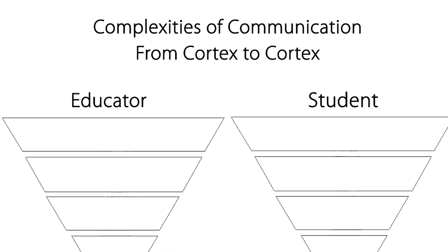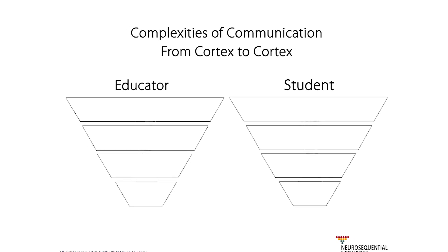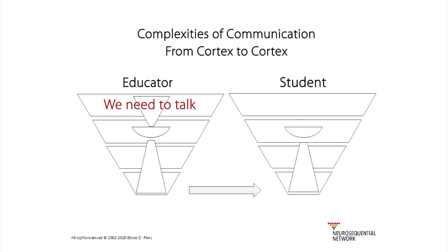When I talk with you, the sound waves are translated into patterned neuronal activity that go into lower parts of the brain, get processed, move to the middle part and get processed, and then finally reach the top. So you don't automatically teach by having something in the teacher's cortex immediately get into the cortex of the child. The input has to travel through the lower and middle parts of the teacher's brain, out into space, into the lower and middle parts of the student's brain, and finally up to the cortex. There are a lot of places where that can go wrong.